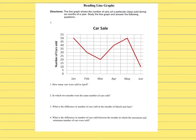When you are analyzing a line graph, you have to pay attention to three things. First, pay attention to the title of the graph. Second, pay attention to the independent variable, which is always going to be graphed on the x-axis. Third, identify the dependent variable.